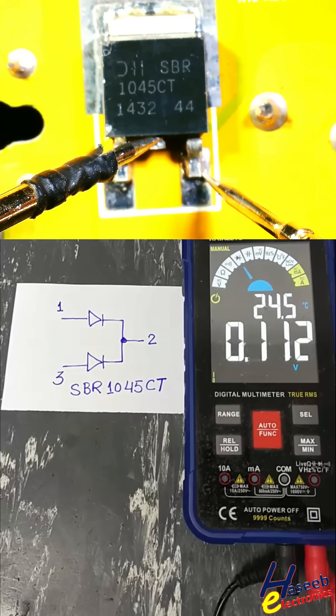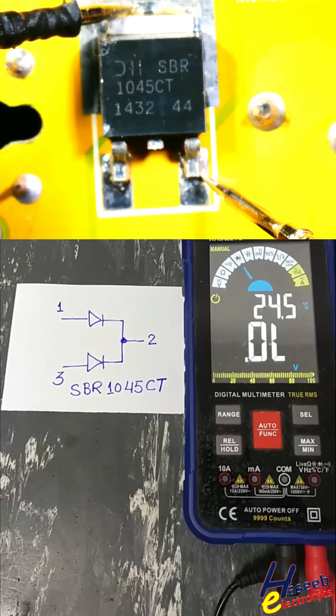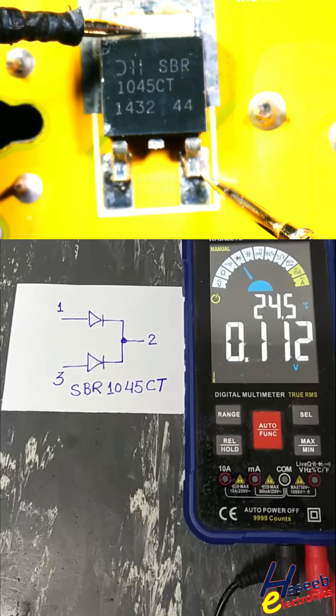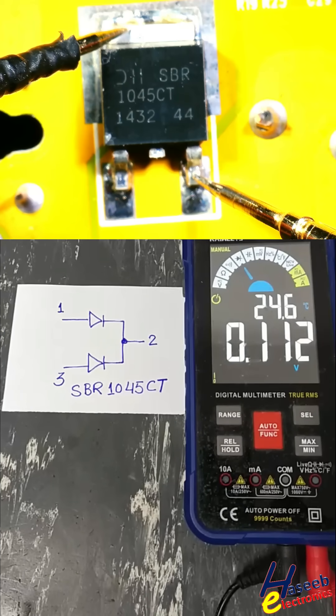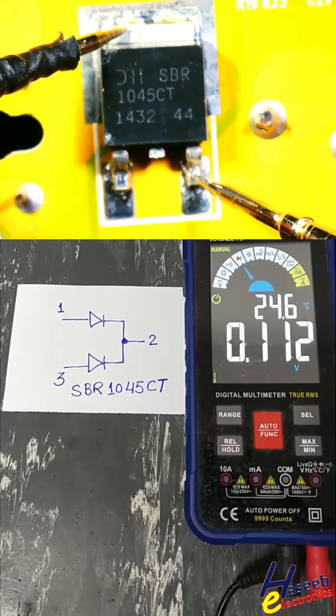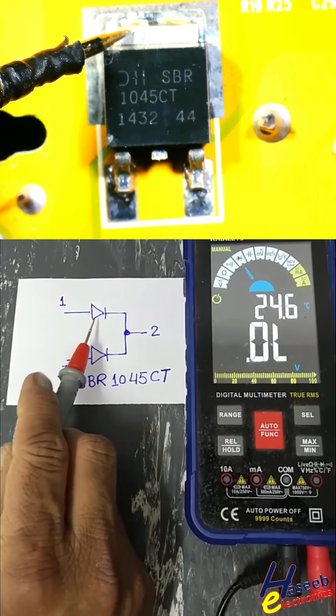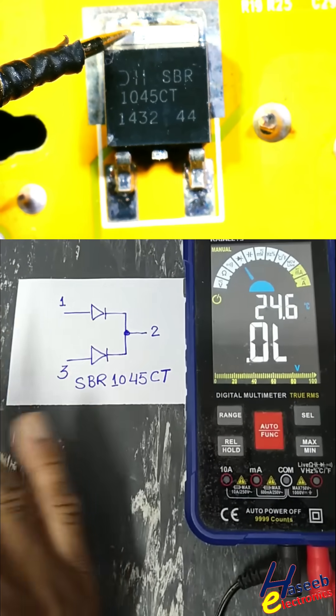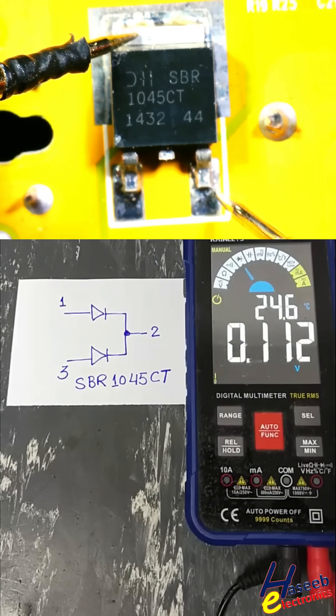0.1 volt because it is Schottky rectifier. It is normal reading, it is good reading. 0.1 volt, normally 0.2 or 0.3 at full rated current 5 ampere. It will drop 0.5 volt when working at full rated current, but with multimeter maybe 0.1 or 0.2. This is maximum reading of this diode.